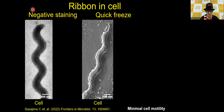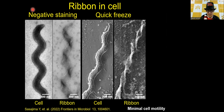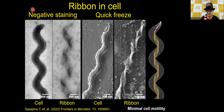This is the cell structure visualized by electron microscopy. If we remove the cell membrane using detergent, we can see the ribbon structure. The gold part in the schematic is the ribbon structure, and we believe this structure is responsible for the swimming mechanism.